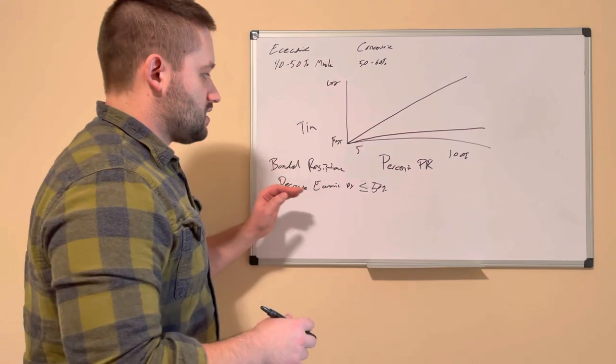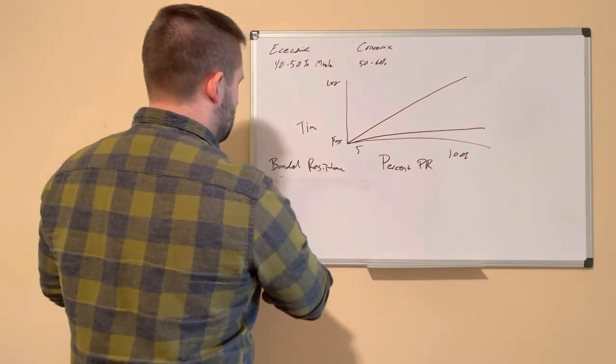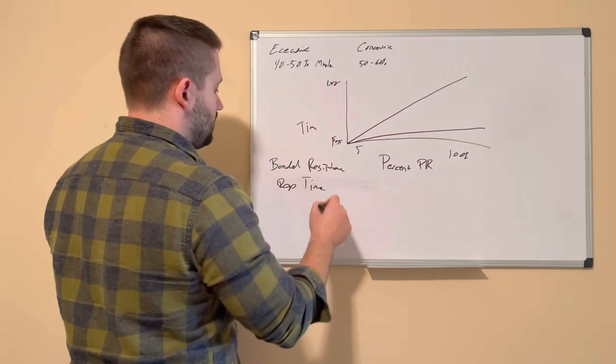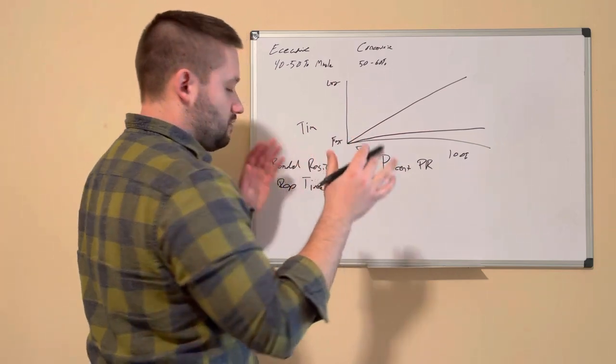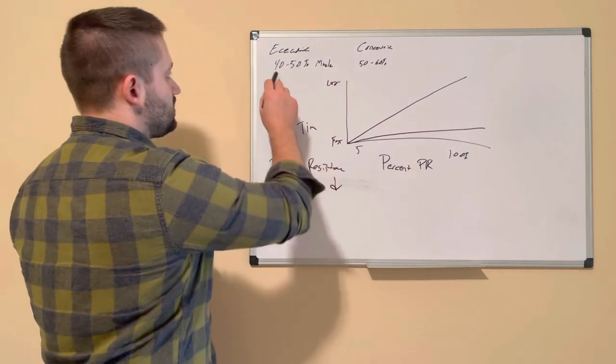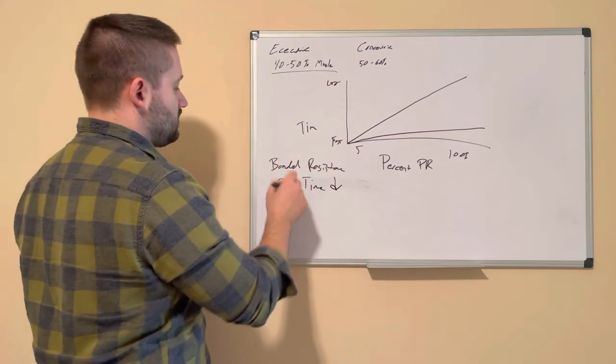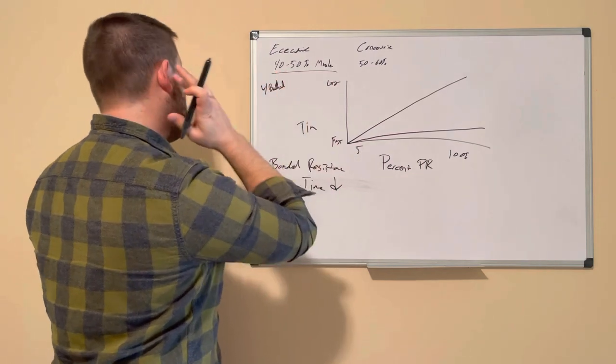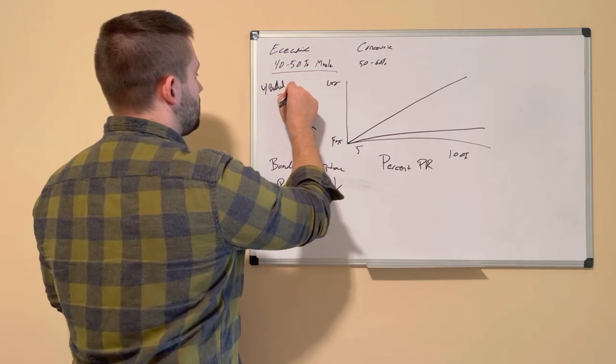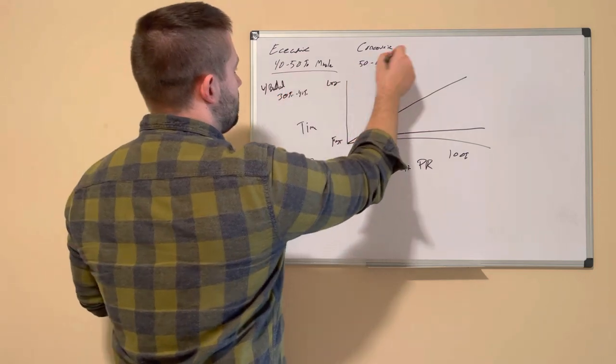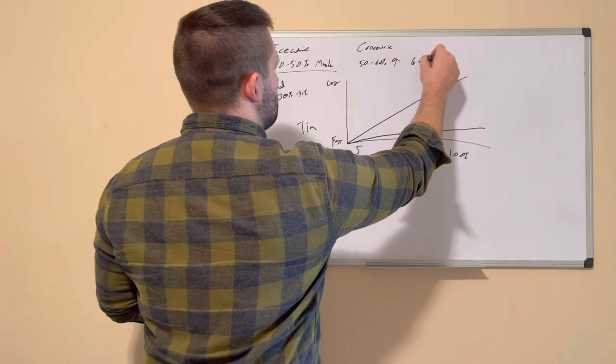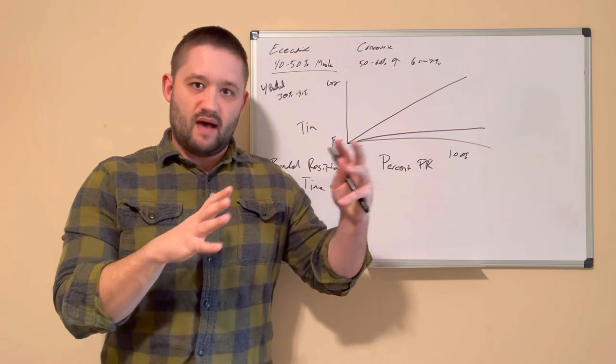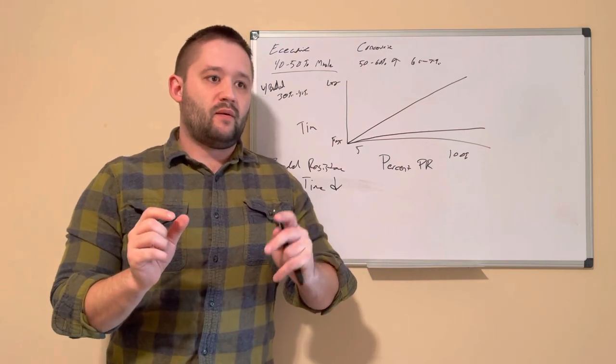So by utilizing banded resistance, now we can take our rep time and cut that significantly lower. So now, instead of utilizing all of this on the eccentric phase with bands, now we can look at 30% to 40% and then increase this to 60 to 70%. The ideal situation, even at maximal effort, especially at maximal effort, is that the eccentric phase of the movement.